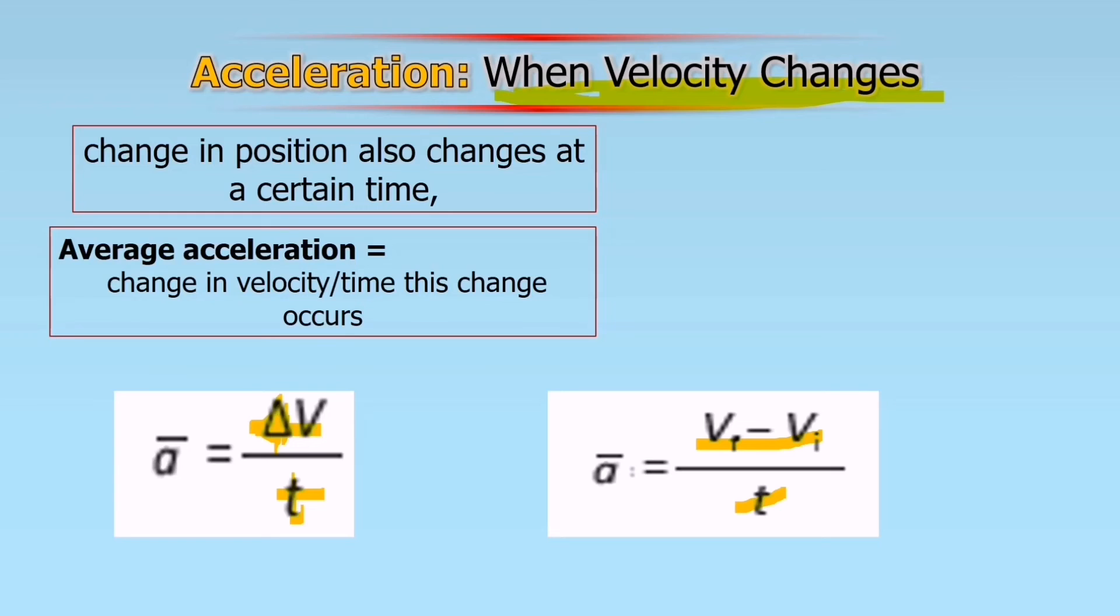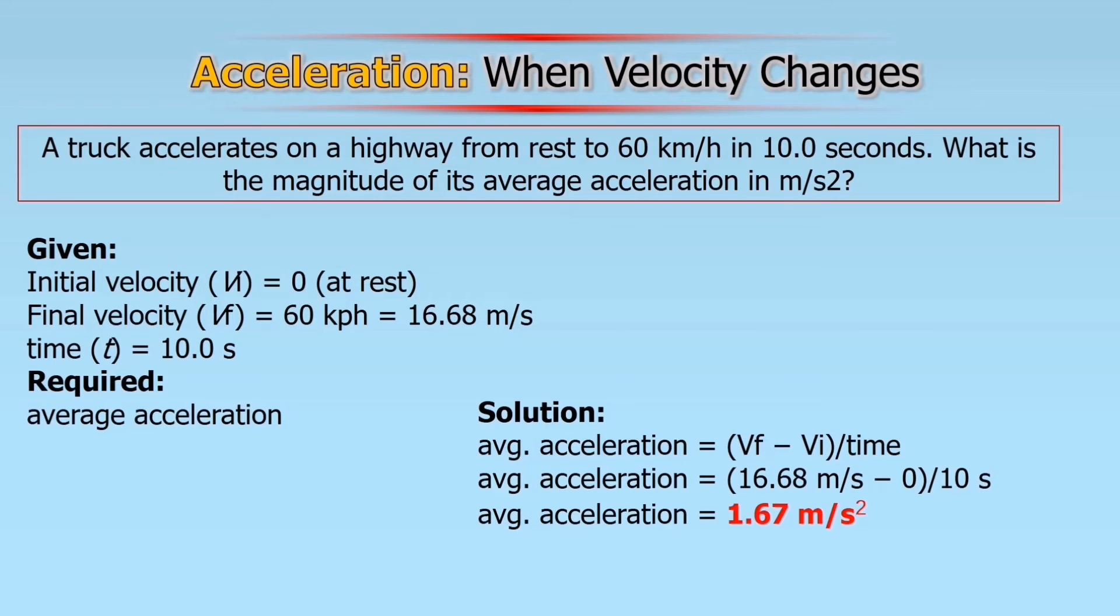For example, we have a given situation. A truck accelerates on a highway from rest to 60 kilometers per hour in 10 seconds. What is the magnitude of its average acceleration in meter per second squared? The given: initial velocity is 0 because it's at rest. Final velocity is 60 kilometers per hour. Since the required answer is meter per second squared, you are going to convert it into meter per second. Time is 10 seconds. Required: average acceleration.